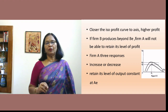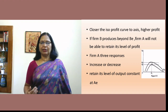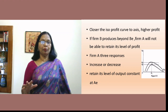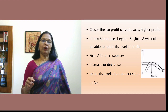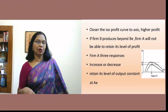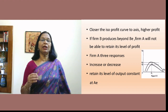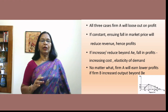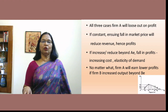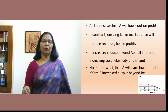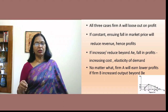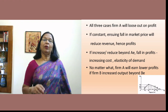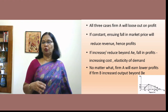The closer the isoprofit curve is to the axis, the higher the profit for the firm. If firm B produces beyond BE, firm A cannot retain the same level of profit. Whether firm A increases output, decreases it, or keeps it constant, it will lose profit — market price falls, or increasing and decreasing costs alter demand elasticity. No matter what firm A does, it will earn lower profit if firm B increases output beyond BE.